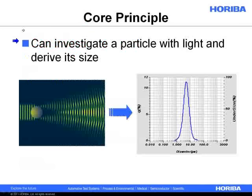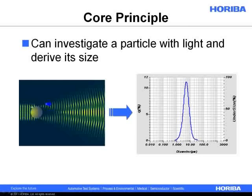Here's the core principle. If anyone ever challenges you, how does this big box work, it basically comes down to: we can investigate a particle with light and derive its size. If we consider this to be an ideal point scatterer, we're hitting it with some well-behaved column of light, and the light is hitting it on the edge. This is called edge diffraction. It's creating waves, and somehow we can study the overlapping interference pattern and derive a particle size distribution from it. This is the very core principle.